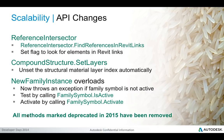In Revit 2016, the reference intersector provides a flag used to switch on searches for elements in Revit links. There's also a change to the compound structure set layers method which automatically unsets the structural material layer index. And finally, the new family instance will throw an exception if a family symbol is placed that has not yet been activated. You can check this by testing the isActive predicate, or activate a symbol before placing it by calling the activate method.